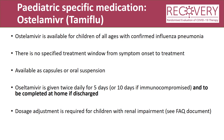Oseltamivir or Tamiflu is available to children of all ages with confirmed influenza and pneumonia. Within recovery, we don't specify a treatment window from symptom onset. Tamiflu is available either as a capsule or an oral suspension. It's given twice daily for five days, or for 10 days if the child is immunocompromised. These courses should be completed even if the child is discharged from hospital before this time, so this might require TTOs. If a child has renal impairment, dosage adjustment is required — this is further detailed in the Frequently Asked Questions document.